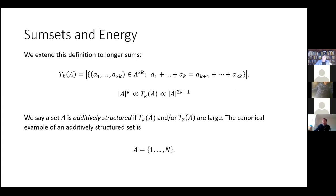And we're going to say that A is additively structured if TkA and or T2A are large, as in close to their upper bounds. And the canonical example of this additively structured set is an arithmetic progression. For example, the first N integers. And if we set A to be the first N integers, then in fact, we attain the upper bound in the two sets of inequalities that I wrote out. So the Tk energy for this set is actually roughly equal to size of A to the power of two K minus one. And similarly, the T2 energy is roughly equal to size of A cubed.